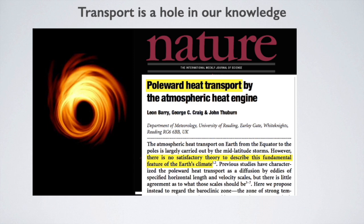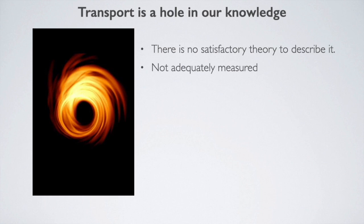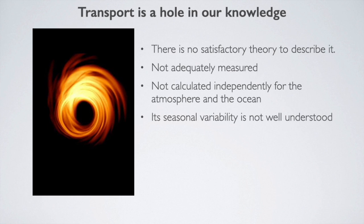Heat transport is a gap in our knowledge of the climate. The first reason is that it responds to very complicated physics, and as the scientists who study it themselves acknowledge, we do not have satisfactory theories to describe it. We cannot adequately measure it because it is constantly occurring in the atmosphere and in the oceans, and it varies greatly throughout the year. From satellites, a global calculation of heat transport is made, but we cannot distinguish the variations in what is transported by the atmosphere versus the ocean. The seasonal variation is very important because of the tilt of the planet's axis — much more heat is transported in winter than in summer, and some of that heat goes in and out of the ocean without being adequately measured.